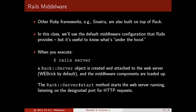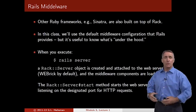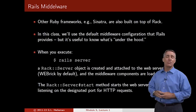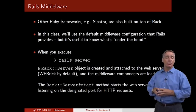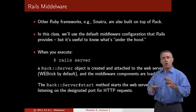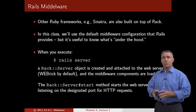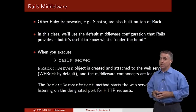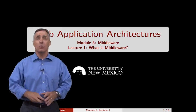You should understand that when you execute 'rails server' and start up the Rails server, a Rack server object is created for you. It's attached to the web server, and then all of the middleware components are loaded up. Then the Rack server start method is implemented — the server starts up, attaches to your Rails application, and starts listening on localhost port 3000. This is what's happening behind the scenes: the web server starts up using the middleware and listens for HTTP requests. This completes the first lecture in module 5.